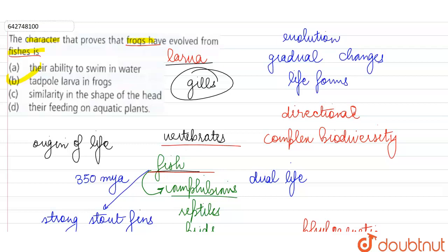Otherwise, if we look at the other options, they are saying ability to swim in water. Now many of the animals are aquatic—doesn't mean all of them are closely related.